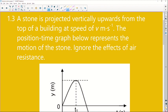Right, the next question we'll be looking at is question 1-3. A stone is projected vertically upwards from the top of a building at speed V meters per second. The position-time graph below represents the motion of the stone. Ignore the effects of air resistance.